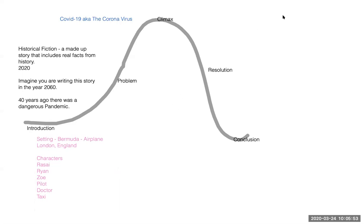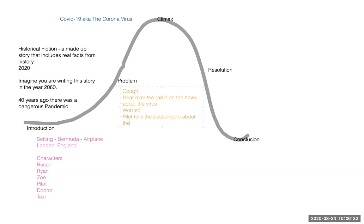My problem: while I am on the airplane, someone begins to cough, and then we hear over the radio — or maybe on the news on the plane — about the virus. Everyone is worried, characters begin to get worried. The pilot talks to everyone and tells the passengers about the virus, and asks us to wear masks. Some of you have been on a plane before and you see that masks sometimes drop down from the ceiling so you can breathe nice fresh air.